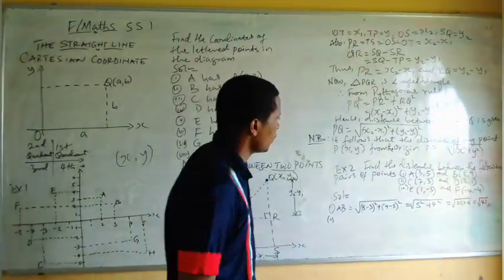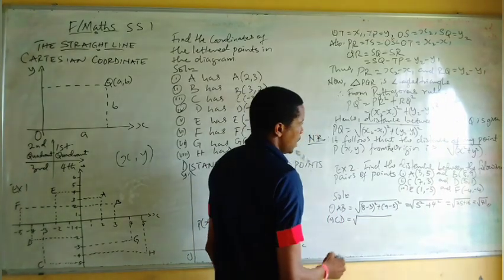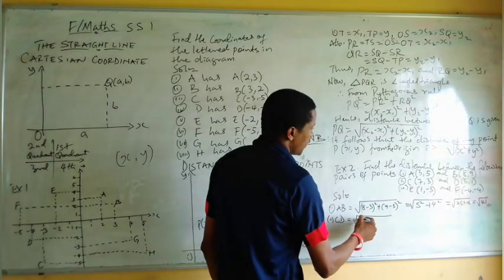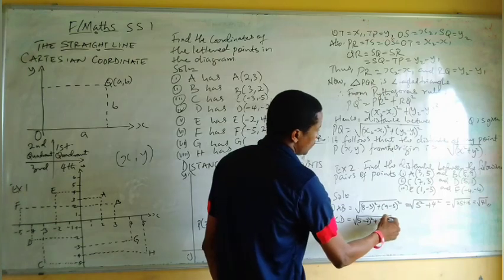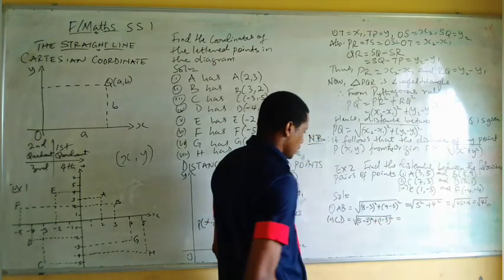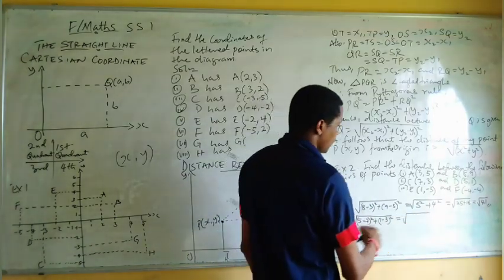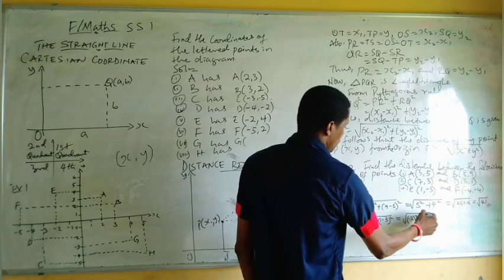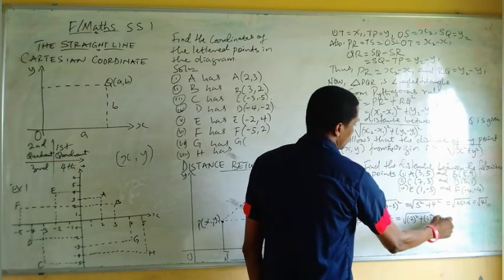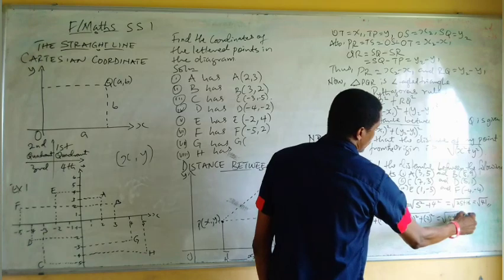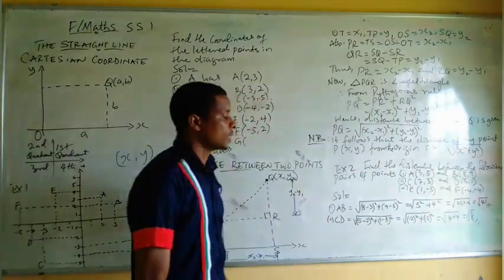For the second one, distance CD equals the square root of (5 minus 7) squared plus (1 minus 3) squared, which is the square root of (minus 2) squared plus (minus 2) squared, equal to the square root of 4 plus 4, which is the square root of 8.